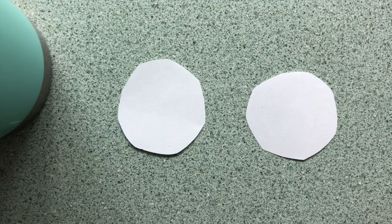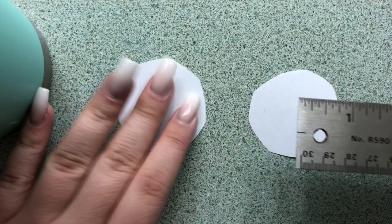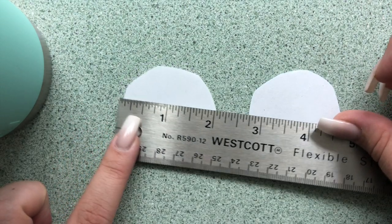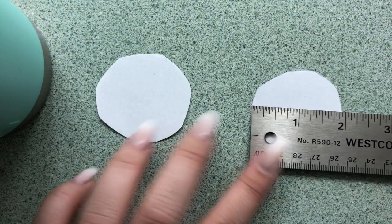The first thing you're going to do is cut out two circles from your paper, and they're each going to be about two inches in diameter.